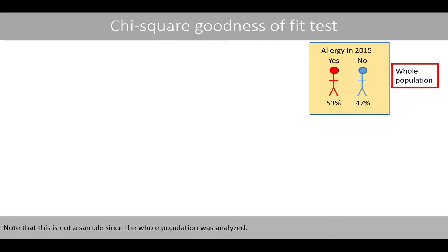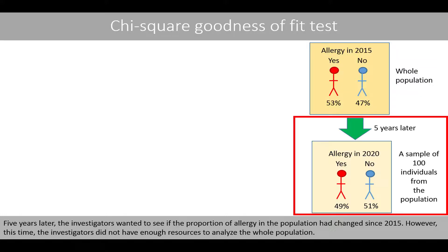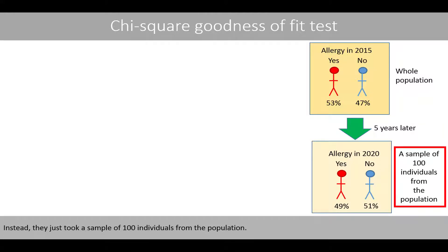Note that this is not a sample, since the whole population was analyzed. Five years later, the investigators wanted to see if the proportion of allergy in the population had changed since 2015. However, this time the investigators did not have enough resources to analyze the whole population. Instead, they just took a sample of 100 individuals from the population.